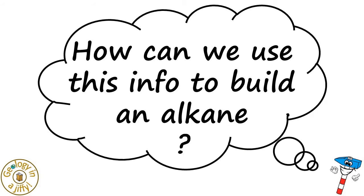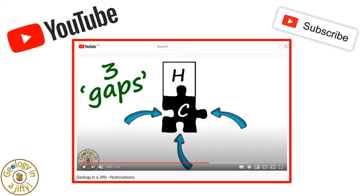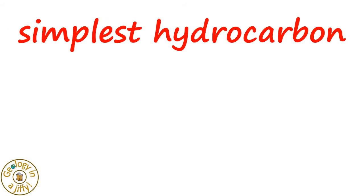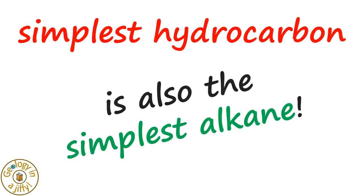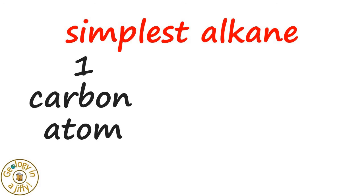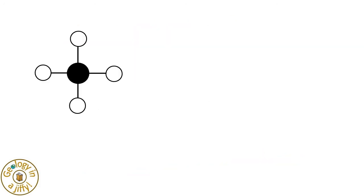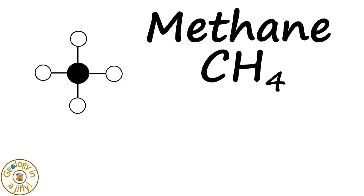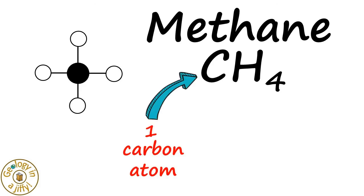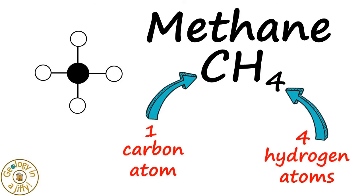How can we use this info to build an alkane? From our hydrocarbons video we know how to build the simplest hydrocarbon, but this is actually the simplest alkane too. If we take one carbon atom and bond it with four hydrogen atoms, we make this molecule, the simplest alkane, called methane. The formula for methane is CH4, as it consists of one carbon atom bonded with four hydrogen atoms.